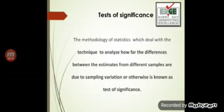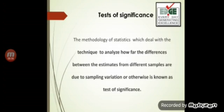So we'll first see what is a test of significance. The methodology of statistics which deals with the technique to analyze how far the differences between the estimates from different samples are due to sampling variation or otherwise is known as a test of significance. The most important thing to remember is that what we are checking in a test of significance is that the difference obtained between the two groups is not due to any coincidence, but it is a true difference.